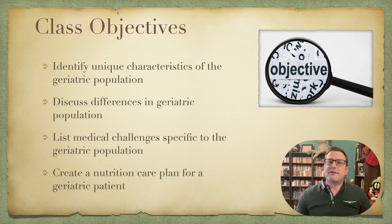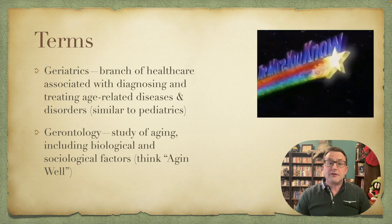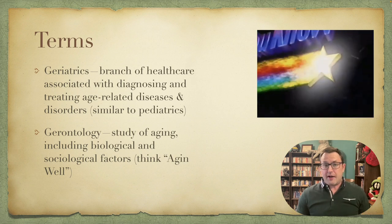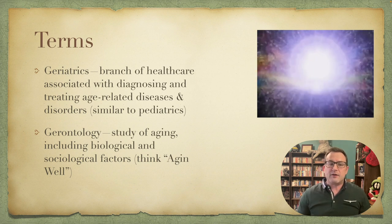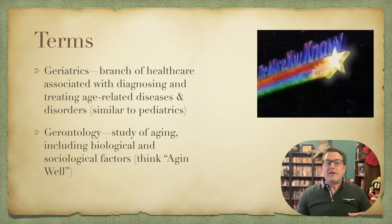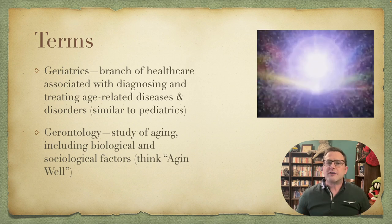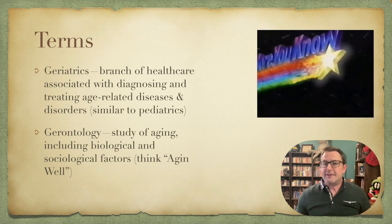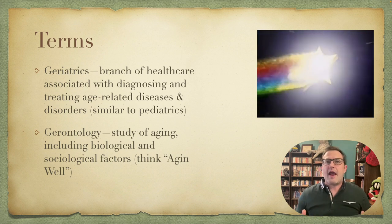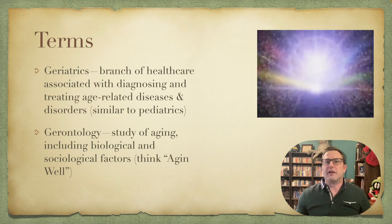Geriatric patients have somewhat different needs and outcomes than an average adult. Going into geriatrics, we need to discuss two terms. Geriatrics, which is a branch of healthcare associated with diagnosing and treating age-related diseases, and gerontology, which is the study of aging and includes biological and social factors. Geriatrics is the study of age-related diseases or the impact of age on diseases, and gerontology is essentially aging healthfully or aging well.